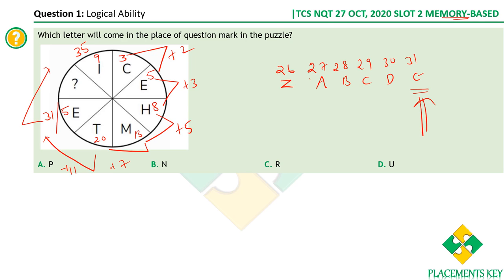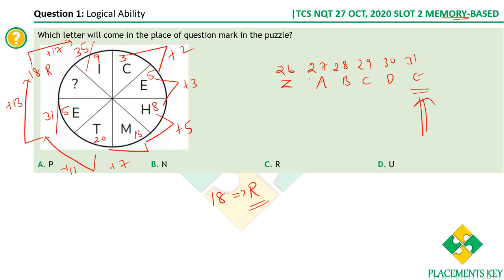Adding 13 to 5 gives 18. R's position number is 18 in alphabetical order, so you get R. Then the next prime number after 13 is 17, so 18 plus 17 gives 35, which is also 9, which is I. The differences between adjacent numbers are always prime numbers: 2, 3, 5, 7, 11, 13, 17. Therefore R, option C, is the right answer.